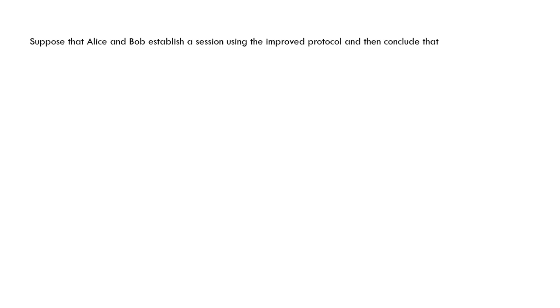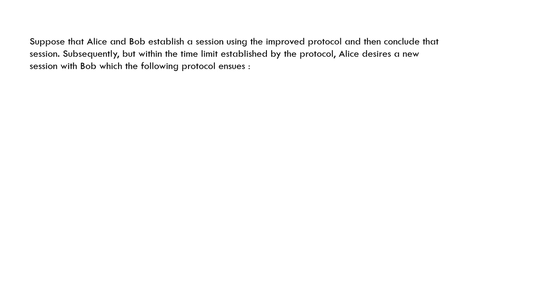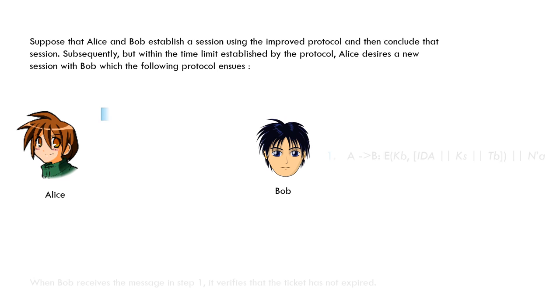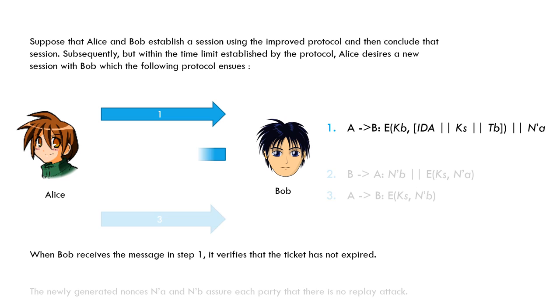Suppose that Alice and Bob establish a session using the improved protocol and then conclude that session. Subsequently, but within the time limit established by the protocol, Alice desires a new session with Bob, and the following protocol ensues. When Bob receives the message in step 1, it verifies that the ticket has not expired. The newly generated nonces N-A and N-B assure each party that there is no replay attack.